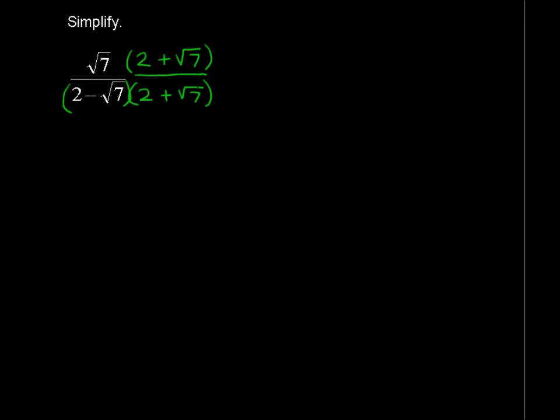But let's first deal with the top, the numerator. So we're going to multiply that square root of 7 through and we have then 2 square roots of 7 plus the square root of 7 times the square root of 7. That leaves just 7. And it's okay to have a radical in the numerator.